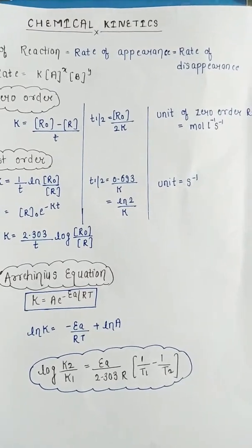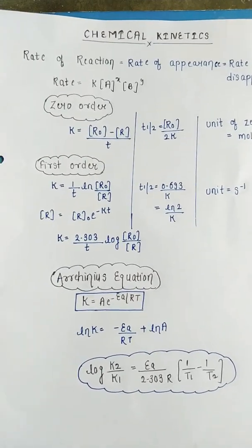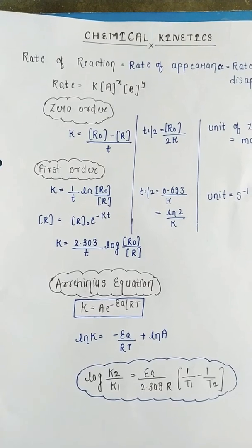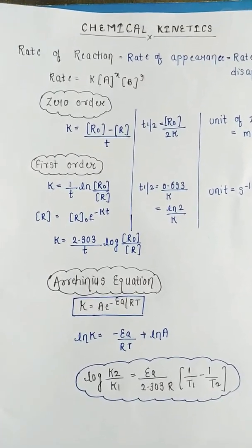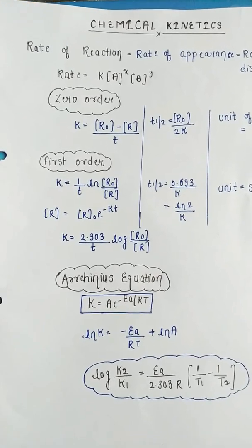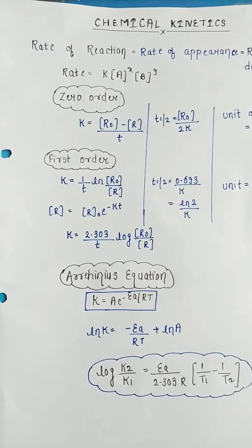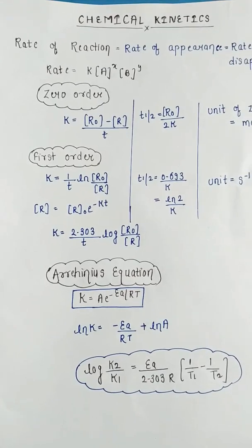As we know, rate of appearance equals rate of disappearance and the rate is written in the form rate equals k[A]^x[B]^y. There are some orders of the rate of reaction: first is zero order and the second is first order. The first order and zero order are most important.